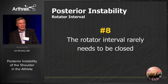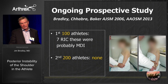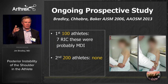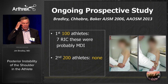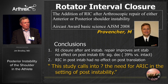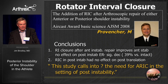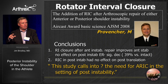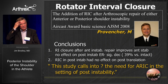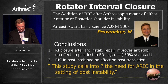The eighth thing I learned is that the rotator interval rarely needs to be closed. In my first 100, I did seven rotator interval closures — they were probably MDIs or posterior-inferiors that I missed. In the second 200, I did none, and those results are actually better. Matt Provencher did a wonderful article showing that rotator interval closure significantly decreases external rotation by 39% and does nothing to posterior stability. His study calls into question the need for arthroscopic rotator interval closure in posterior instability — you do not need to do it.